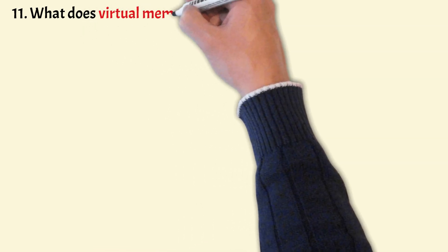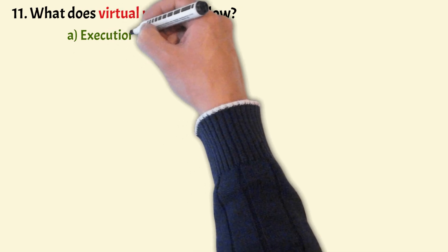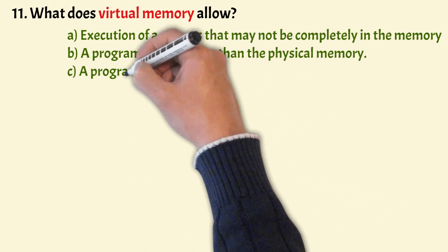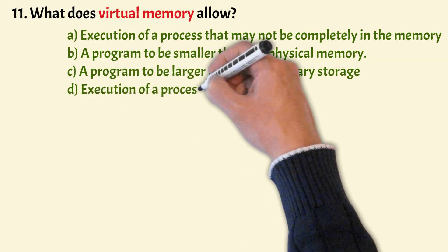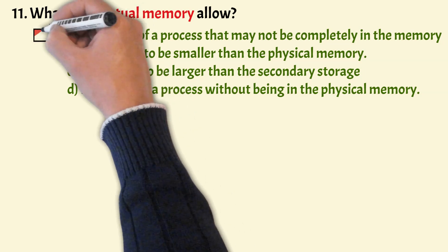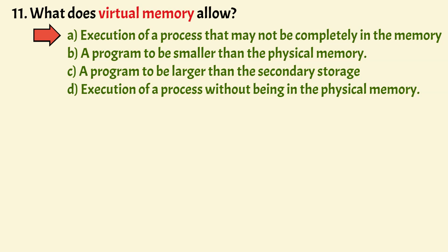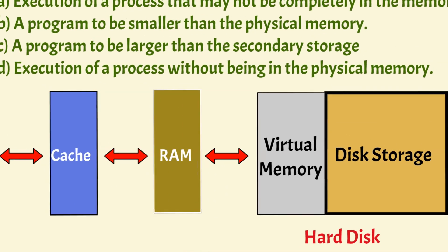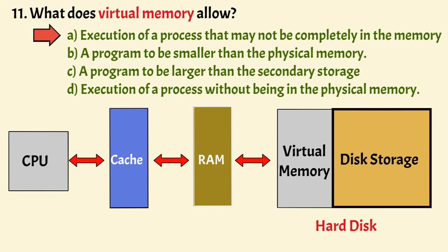What does virtual memory allow? Options: execution of a process that may not be completely in memory; a program to be smaller than physical memory; a program to be larger than secondary memory; execution of a process without being in physical memory. The correct answer is Option A — execution of a program that may not be completely in memory. Virtual memory is part of secondary storage but gives the user an illusion that it is part of main memory. It allows running large applications with low main memory and increases the degree of multiprogramming. Virtual memory frees RAM by swapping data not recently used to a storage device such as a hard drive.